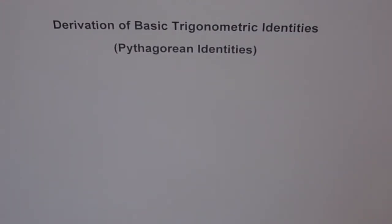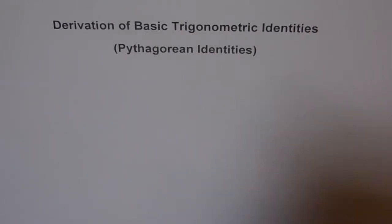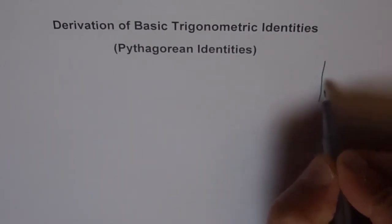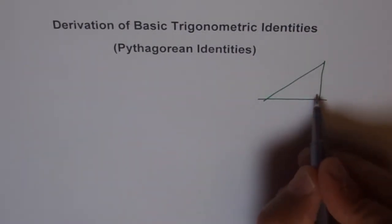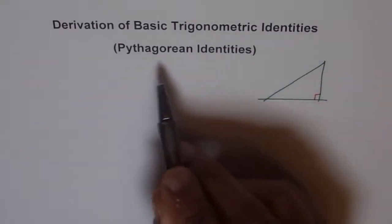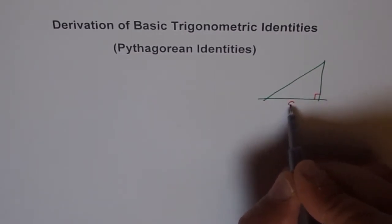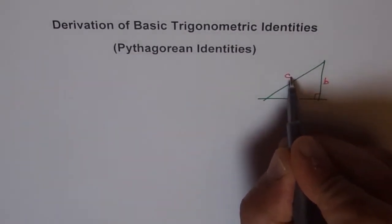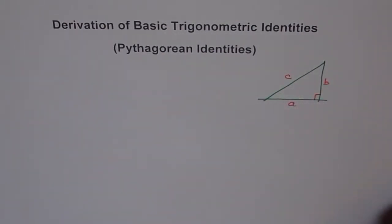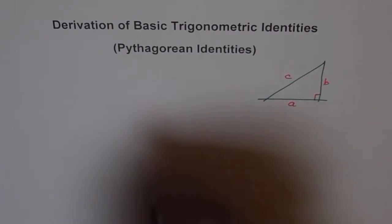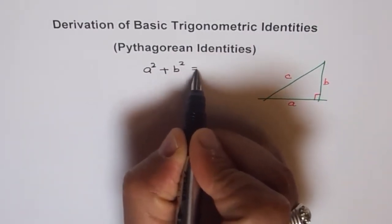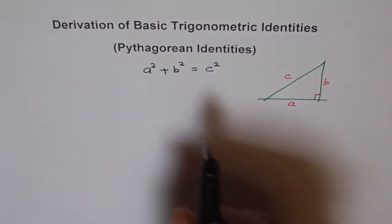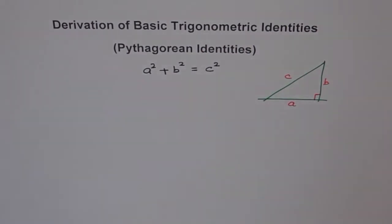Hello. Let's try to derive the basic trigonometric identities. We will do it from a right angle triangle. Here is a right angle triangle — let me draw one for you. This one is the right angle, 90 degrees. In a triangle, you know the Pythagorean theorem: let the two sides be A, B and C. The relation between them is A squared plus B squared equals C squared. So that's the Pythagorean theorem, and we are going to use this basic theorem to derive all our identities.